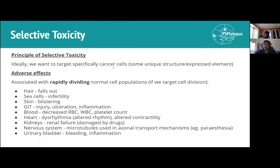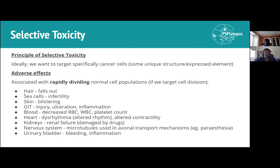Anti-cancer drugs must achieve the principle of selective toxicity. Because cancer cells are so similar to normal cells — unlike bacteria which have a clear peptidoglycan layer — they are commonly associated with effects on rapidly dividing normal cell populations. Side effects therefore include hair loss, infertility, GI tract blistering, altered blood counts, cardiac dysrhythmia, and renal failure.